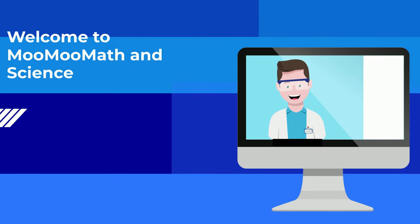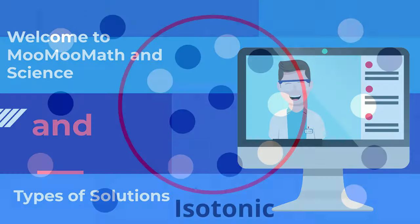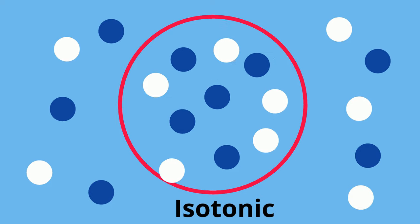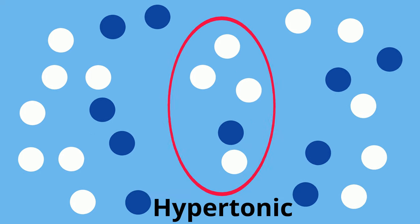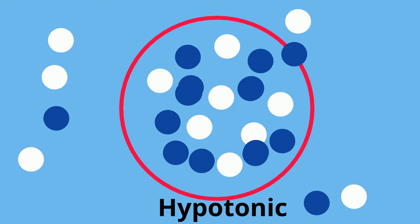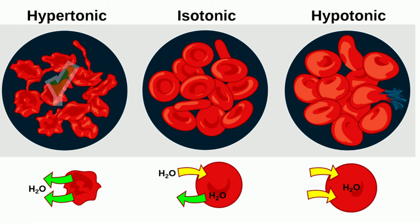Welcome to MooMooMath and Science. In this video, let's take a look at the difference between isotonic, hypertonic, and a hypotonic solution. Take a look at these red blood cells and the effect of different solutions. Let's figure out why sometimes a red blood cell stays the same, sometimes it shrinks, and other times it swells.